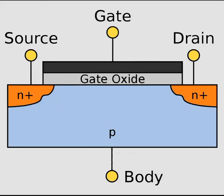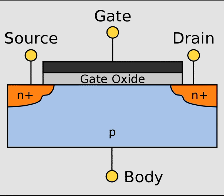Let's have a look at another semiconductor device called the field effect transistor, or FET. Unlike the bipolar junction transistor, where the output current — the collector current — is controlled by an input current (the base current), in FET the output current, called IDS (drain-to-source current), is controlled by an input voltage applied at the gate.